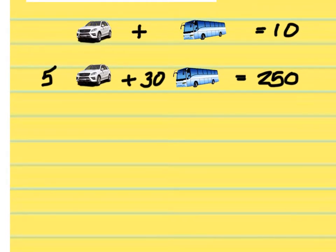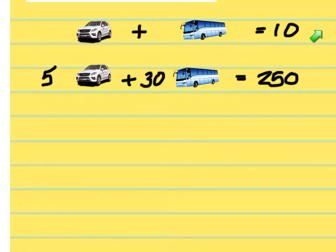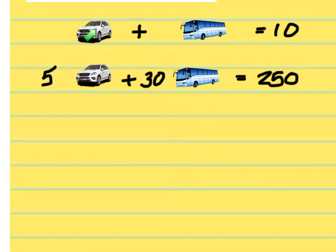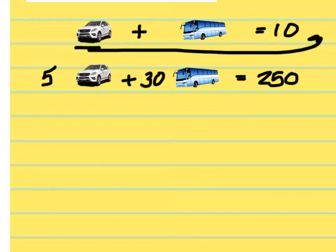You must solve this system by elimination or substitution. For substitution, I am going to isolate either the car or the bus. This is the easiest equation to deal with — there won't be any division necessary. I am going to move the car over to the other side and change the operation, such that I am left with B equals 10 minus C.